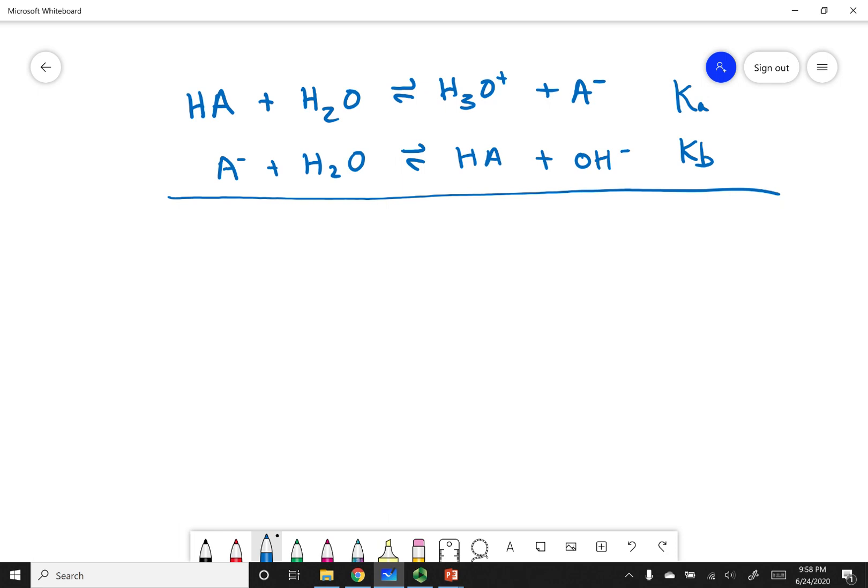Now what I'm going to do is add these reactions up, but I'm also going to eliminate things that appear on both sides. I've got an A- on both sides of my equation, and I've got HA on both sides of the equation. So now what I can do is write the resulting equation. I've got two H2O's and then H3O+ plus OH-.